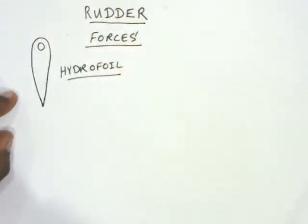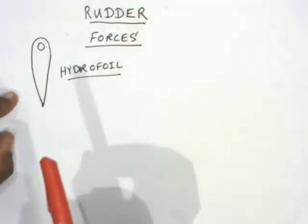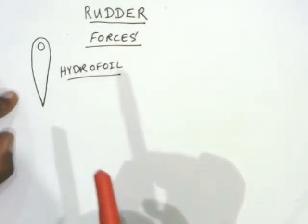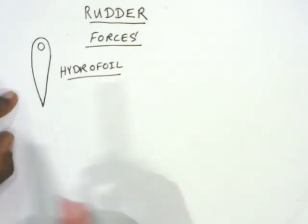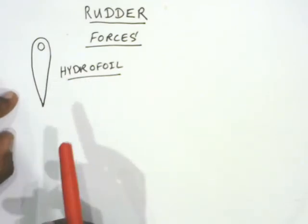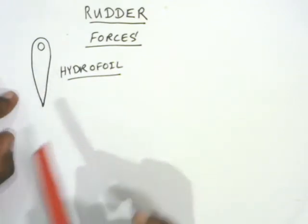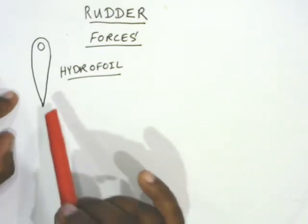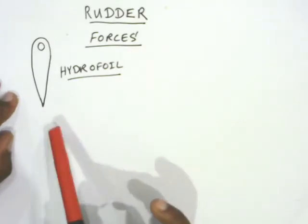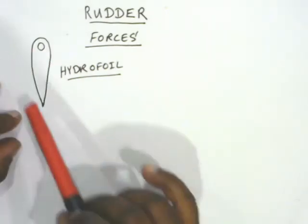So why this shape? First, why do we need a rudder on a ship? The rudder is the item which will act as the steering mechanism for the ship. By using this rudder we can turn the ship. You will see later on how this turning is happening — whether it is the rudder or something else — but for now we'll just assume that the rudder is there to turn the ship.